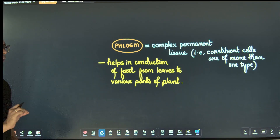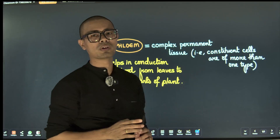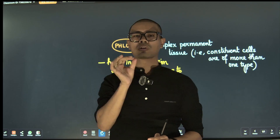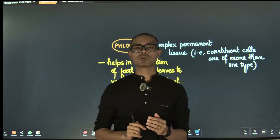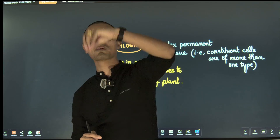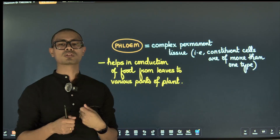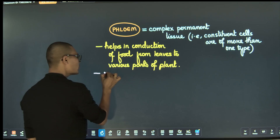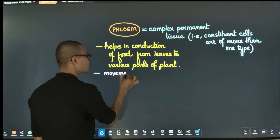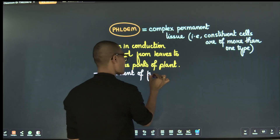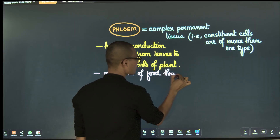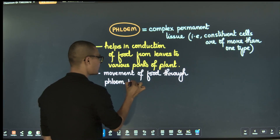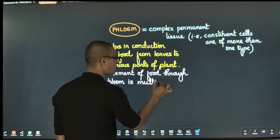Phloem — food conduction is multi-directional. Whereas xylem water conduction is always unidirectional — water always moves upward due to transpirational pull. The movement of food through phloem is multi-directional.